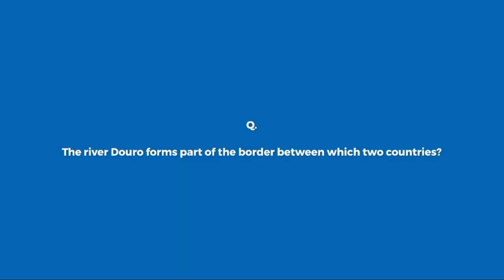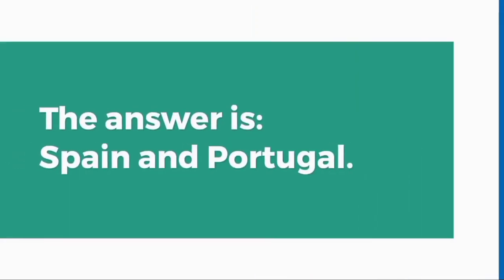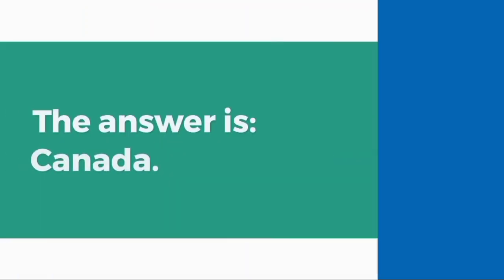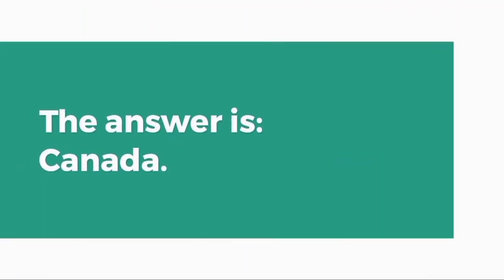The river Douro forms part of the border between which two countries? Spain and Portugal. In which country is the Great Slave Lake? Canada.